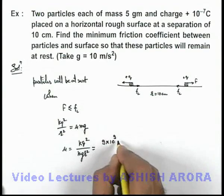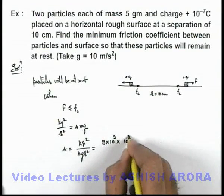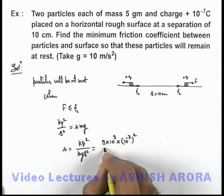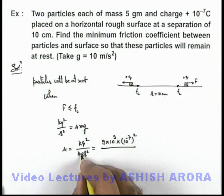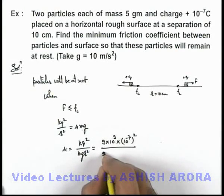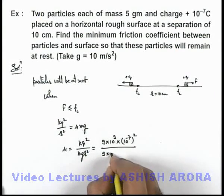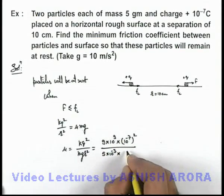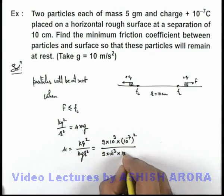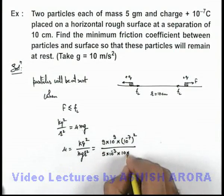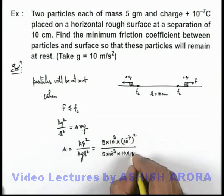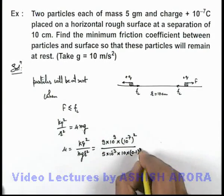It is 9 into 10 to power 9 multiplied by 10 to power minus 7 whole squared, divided by mass which is 5 grams, that is 5 into 10 to power minus 3 kilograms. g for simplicity we can take acceleration due to gravity at 10, and the separation is 10 centimeters so it is 0.1 squared.